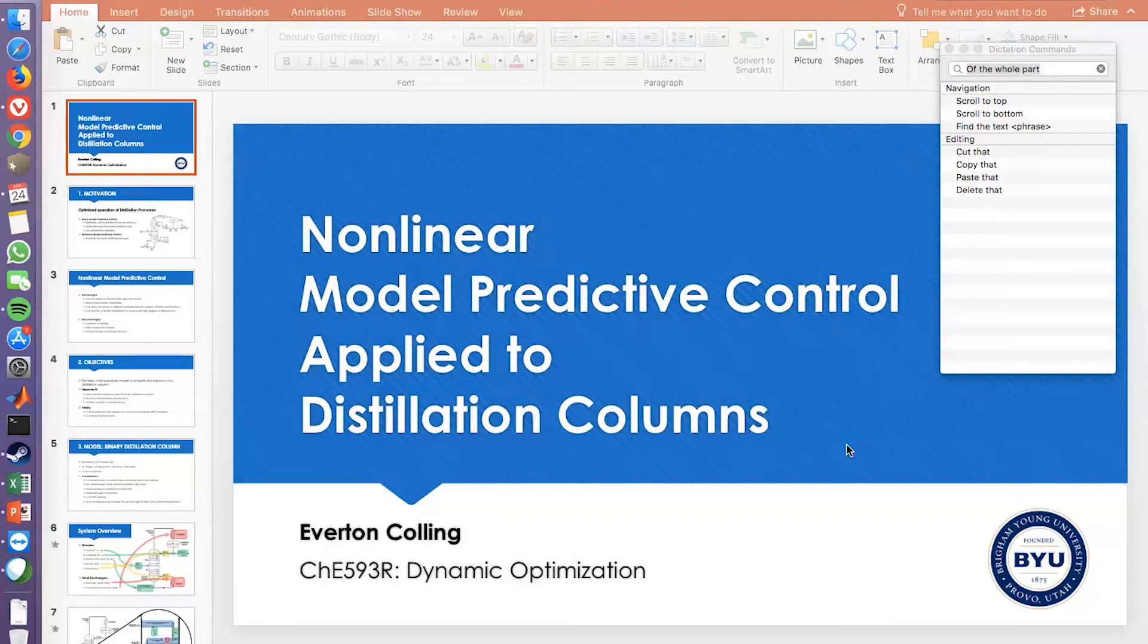So Everton, I just had a question for you. Linear model predictive control is definitely probably the most commonly applied to distillation columns in industrial applications. So why nonlinear MPC? Why do we need to use a nonlinear model in this case?